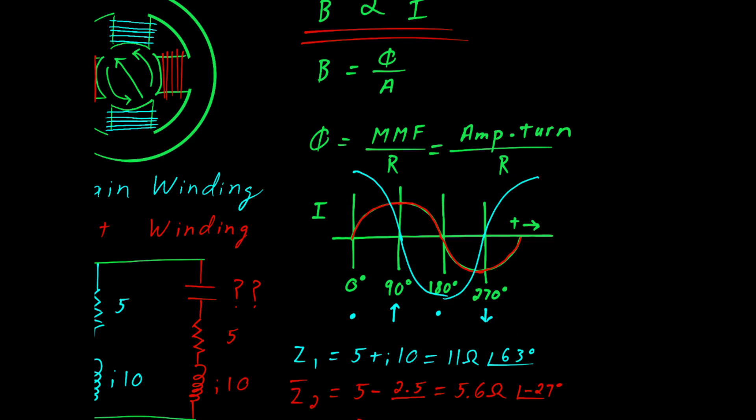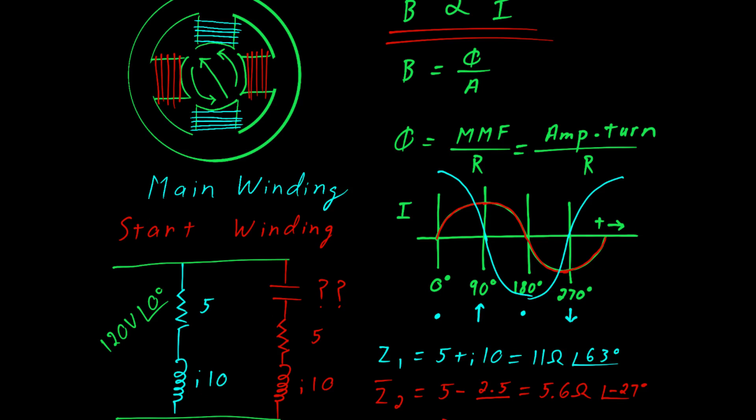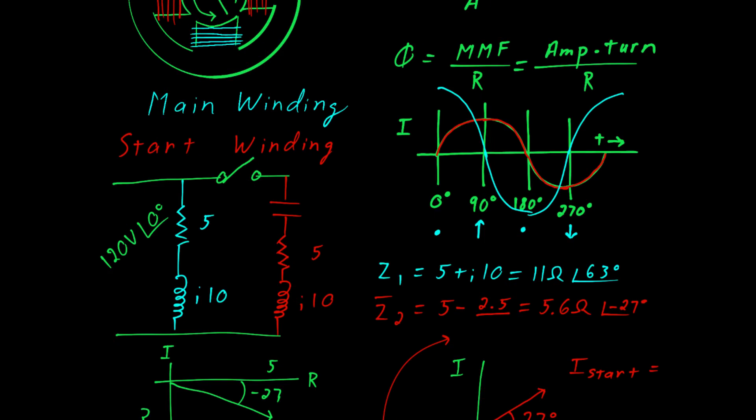Earlier I mentioned that you don't need both windings to run the machine. In fact all you need is the main winding. You'll find many manufacturers have a switch that once the motor is up to a certain speed it will disconnect the start winding. I should mention that the value of the capacitor is chosen so that it equals negative J 12.5. Since this is a series circuit the impedances all add up. So we have 5 ohms as the real part and then you have the sum of the capacitor and the inductor which in this case is negative J 2.5 ohms.